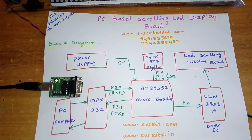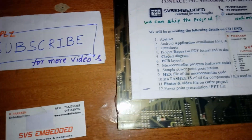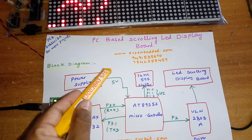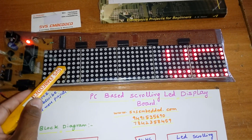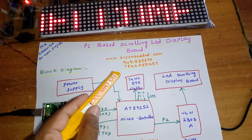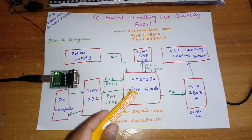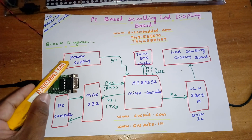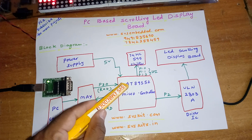Hi, we are from SVS Embedded. The project title is PC-based scrolling LED display board — a dot matrix LED scrolling display board. I am using an AT89S52 microcontroller, which is an 8-bit microcontroller, and a 5-volt power supply. I am using a 12-volt adapter and regulating that down to get 5 volts.